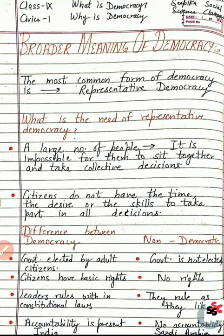So, broader meaning of democracy — we have had many discussions and found out that the most common form of democracy is representative democracy. Our country is diverse and has a large population, so people can't directly participate in decision making. We have therefore selected representative democracy, which means the majority of people rule through their elected representatives.